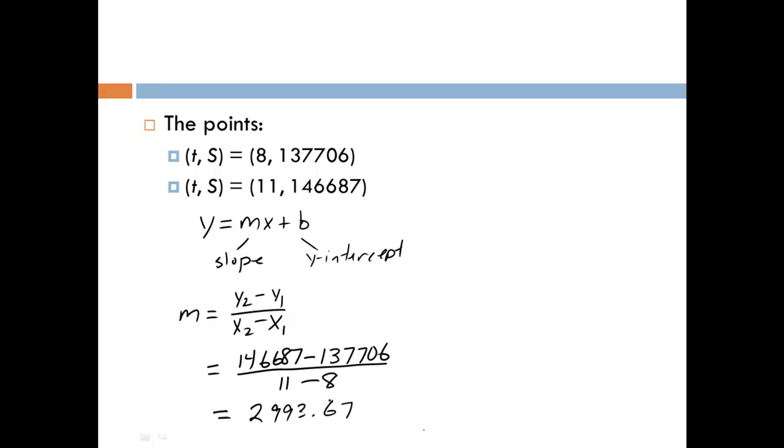Let's just use the first one. So we know y equals our slope, so that's 2,993.67x plus b. I know the y value will be 137,706 when the x value is 8.